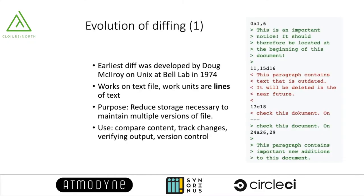So not surprisingly, as early as 1974, diff and patch were developed as Unix programs by Bell Labs. These programs have been widely used even today. They work with lines of text and are mainly useful for comparing text files, tracking changes, verifying output, or being used in version control systems.